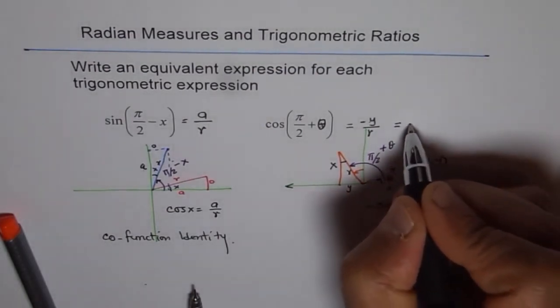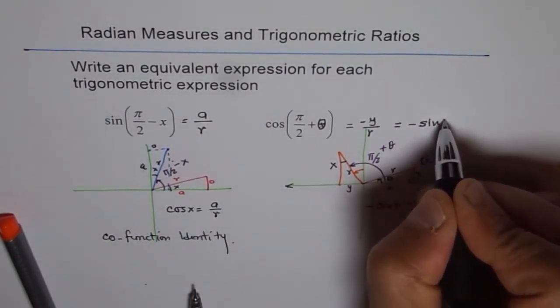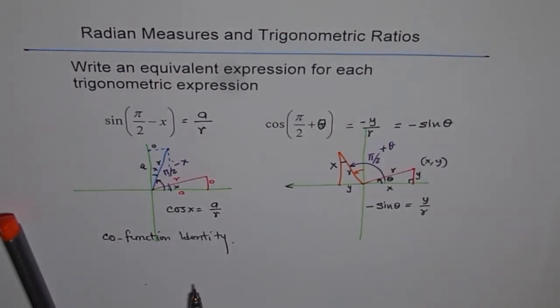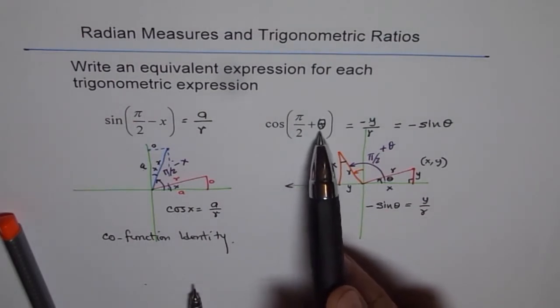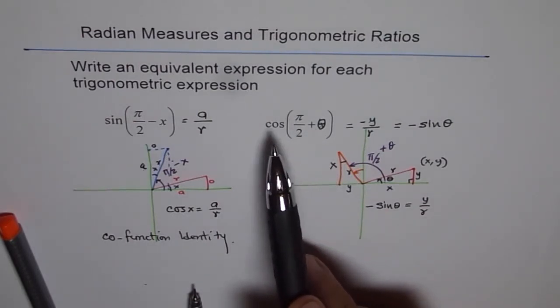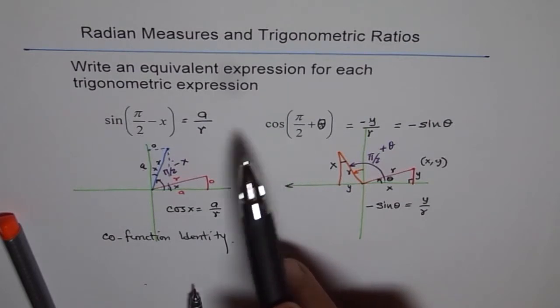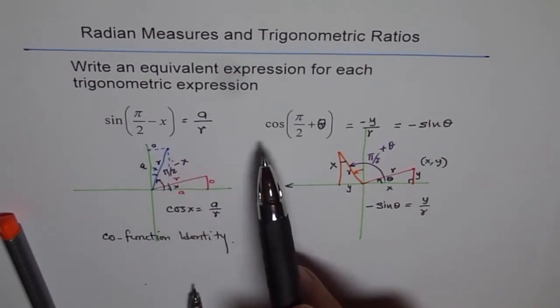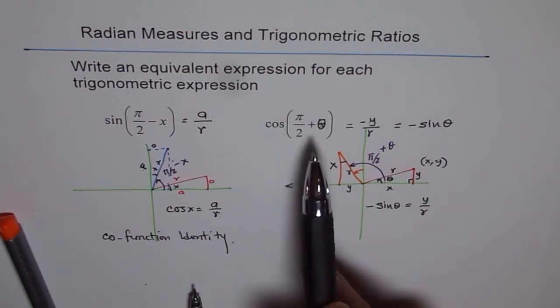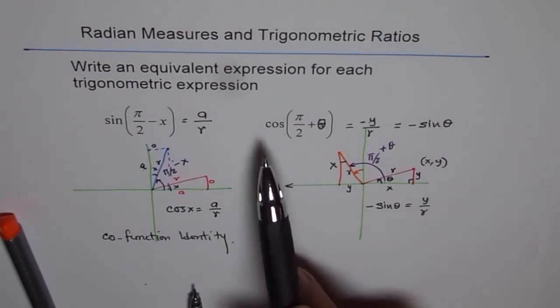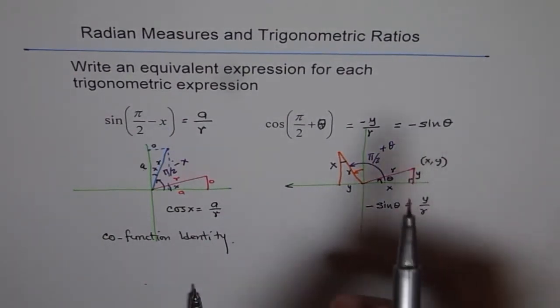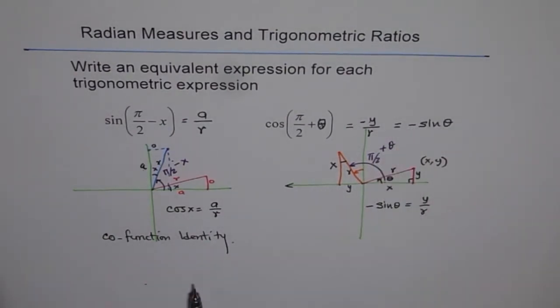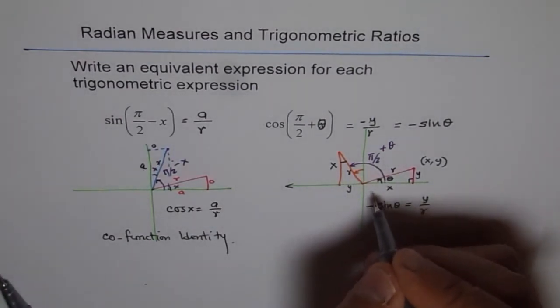So, the co-function identity is minus sin theta. That is the co-function identity. Remember one thing. Whenever you have π/2 plus theta or minus theta, then cos changes to sin, which is its co-function. Sin changes to cos, which is its co-function. And tan and cotangent also will interchange. That is one part. And second thing which you need to remember is about this sign. Sometimes, that sign could be positive, sometimes negative. How will you decide about that?